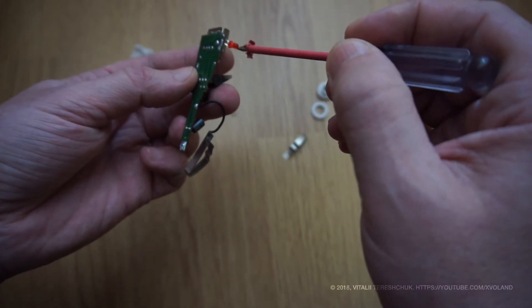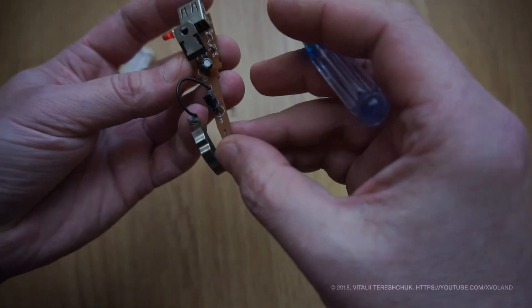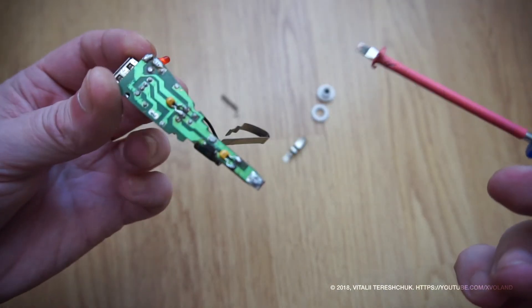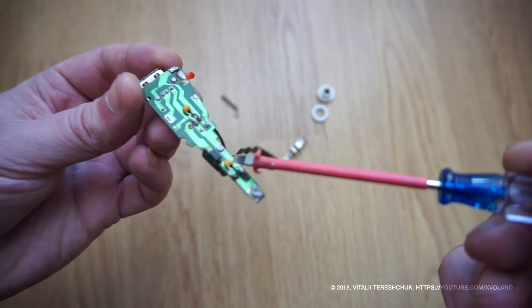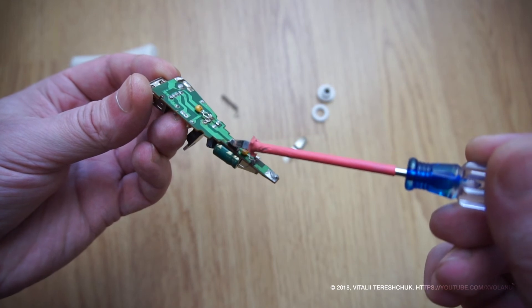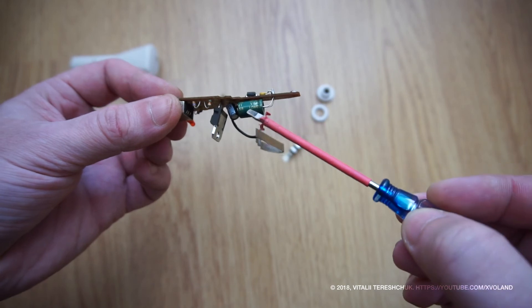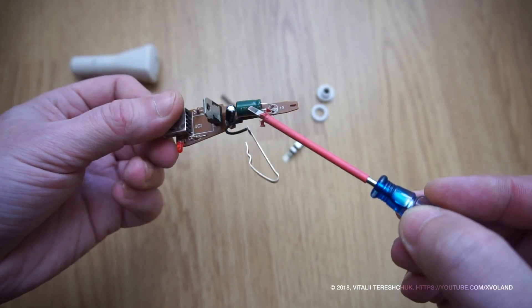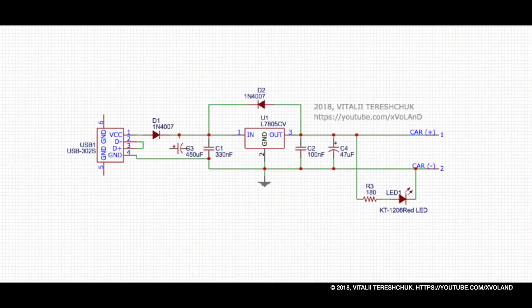LED lights when the device is connected and works. Here are my changes. Two filtering capacitors added for low filtration. Diode for short circuit protection. And the film capacitors at the input 450uF. You can see the socket with all these changes.